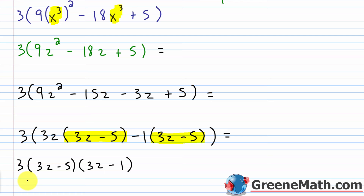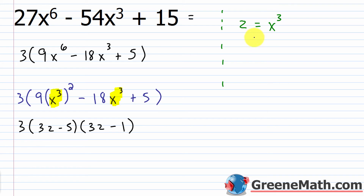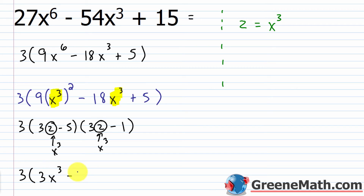Am I done? No — I substituted to get here, so I've got to substitute to finish. Since z equals x cubed, I replace every z with x cubed. The final answer for the original problem is 3 times the quantity (3x cubed minus 5) times the quantity (3x cubed minus 1). If you don't believe me, FOIL this out, multiply the result by 3, and you'll get back to 27x to the sixth minus 54x cubed plus 15.